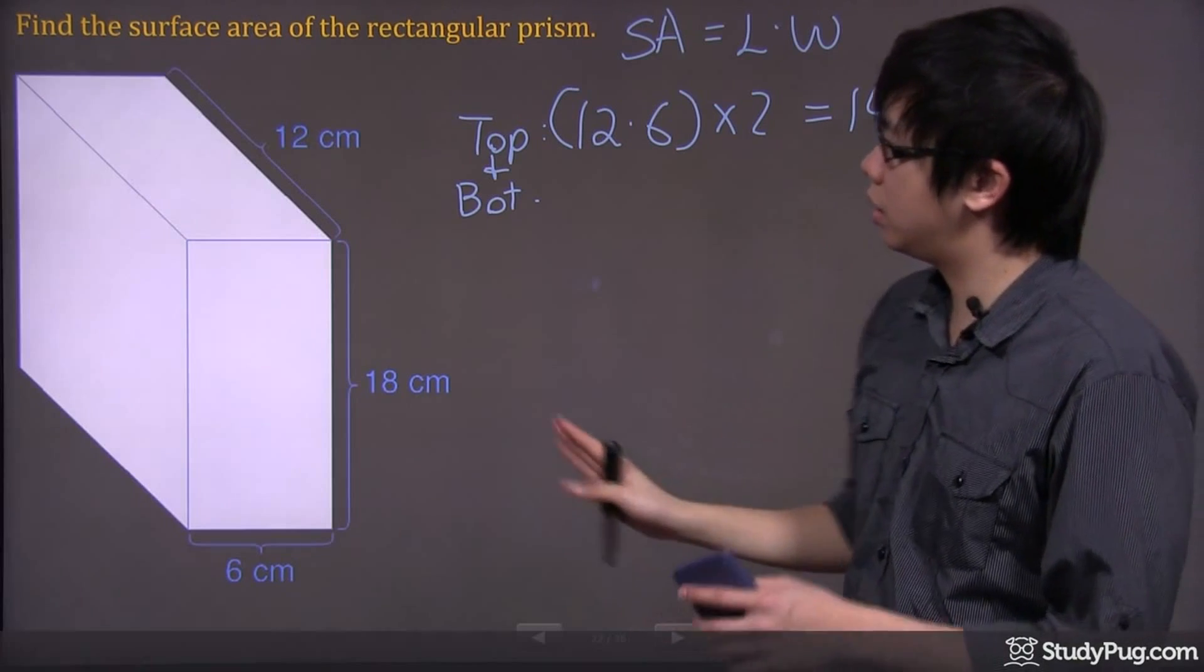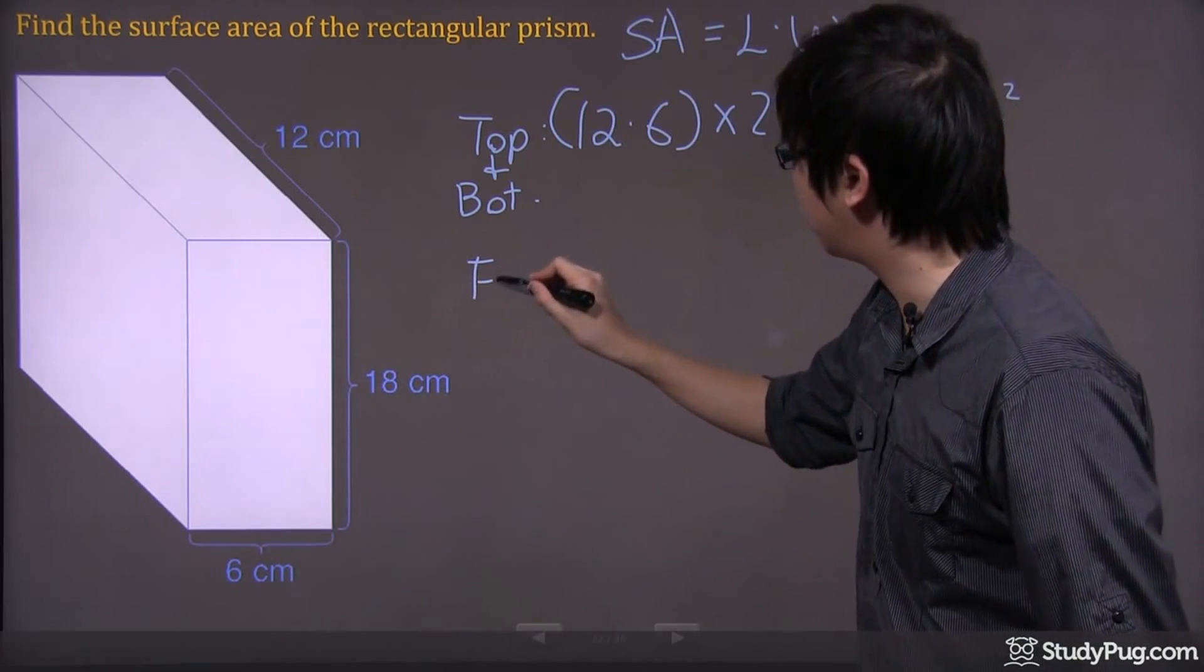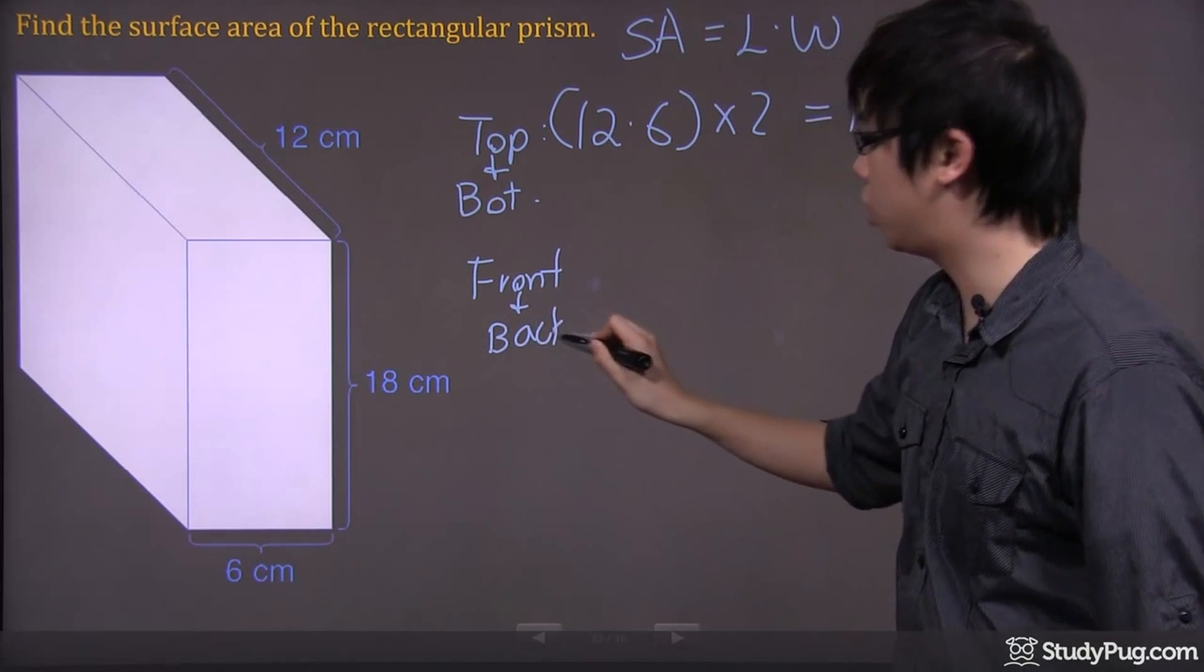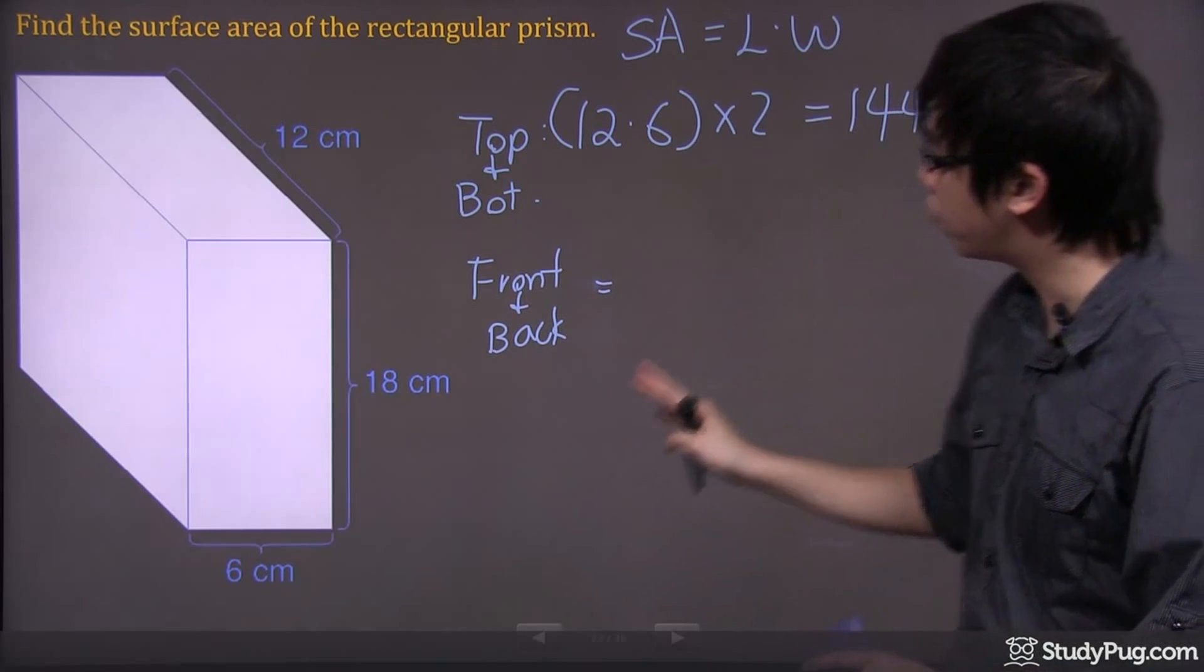Now, is there anything else we need to calculate? Yes, we do. We've got the front and the back. So let's do another one that says the front and the back. Of course, if you're doing this on your own, you don't have to write all this stuff down. I'm just trying to show you what I'm calculating.